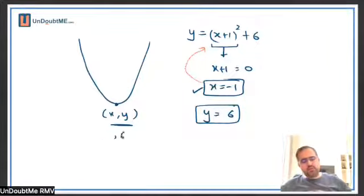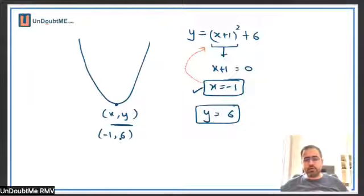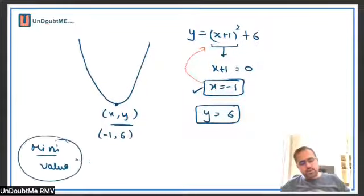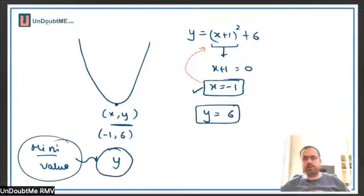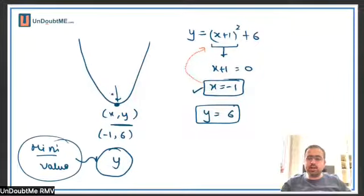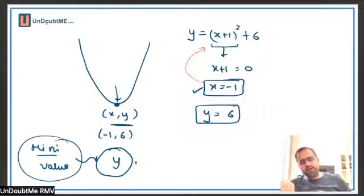So this becomes the vertex. It is always like this — for this example the vertex is minus 1 comma 6. Now, when we say minimum value, the value of a function is always y. The vertex is itself the minimum coordinate. The y-coordinate of the vertex will be your minimum value of the quadratic.